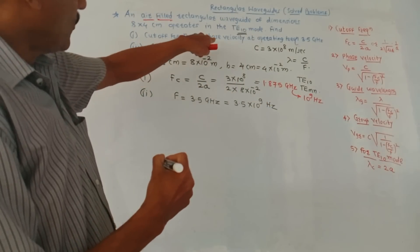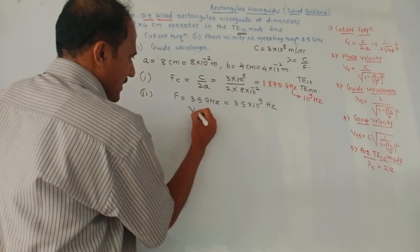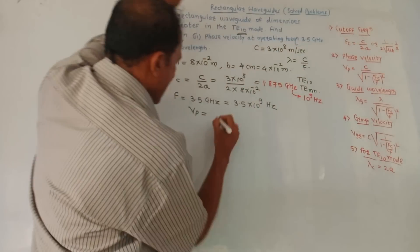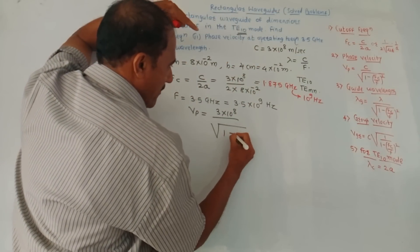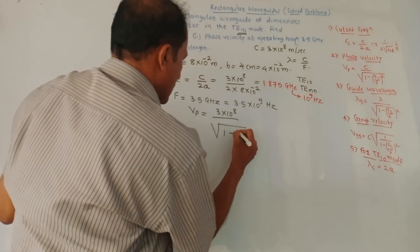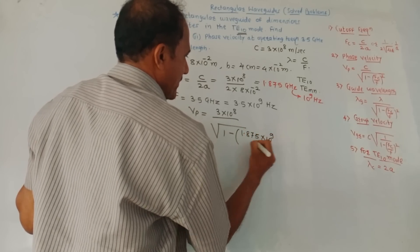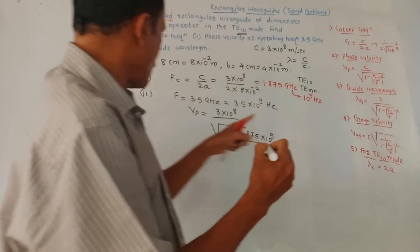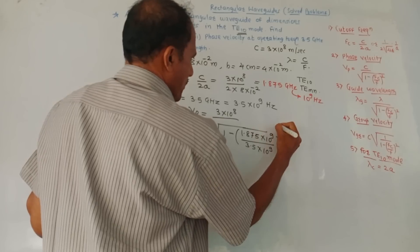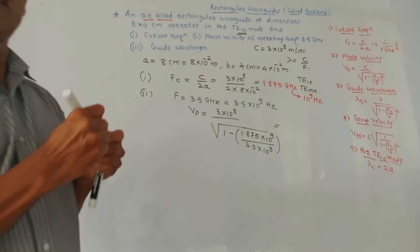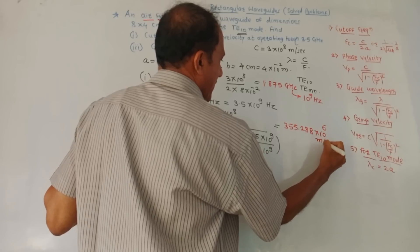We need to calculate phase velocity at this operating frequency. The corresponding formula is vp equals c upon square root of 1 minus (fc upon f) squared. So c is 3 × 10⁸ meters per second, upon square root of 1 minus (1.875 × 10⁹ upon 3.5 × 10⁹) squared. If you solve this on the calculator, the value of vp is 355.288 × 10⁶ meters per second.